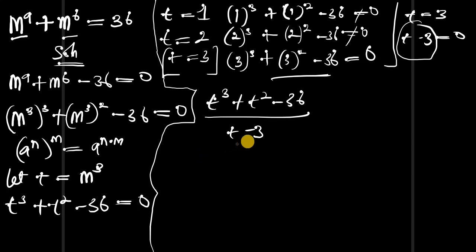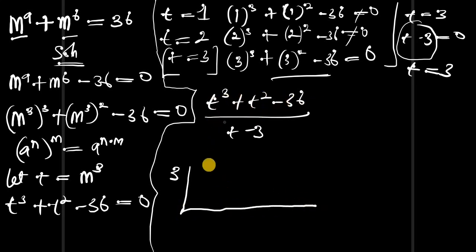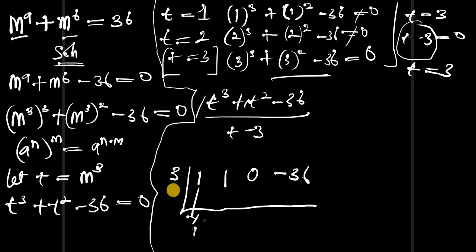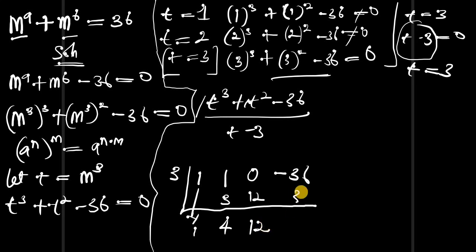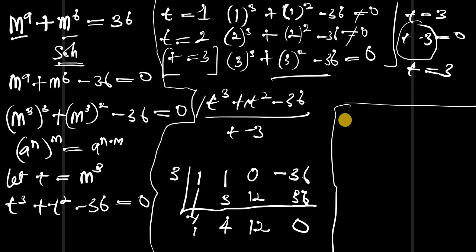For synthetic division, we change this to the solution value t equals 3. Now let's write the coefficients of the expression: the coefficient of t³ is 1, the coefficient of t² is 1, there's no t power one so we have 0, and we have negative 36. Bringing down the 1: 3 times 1 is 3, 1 plus 3 is 4; 3 times 4 is 12, 0 plus 12 is 12; 3 times 12 is 36, negative 36 plus 36 is zero. The resulting coefficients are 1, 4, 12, 0.